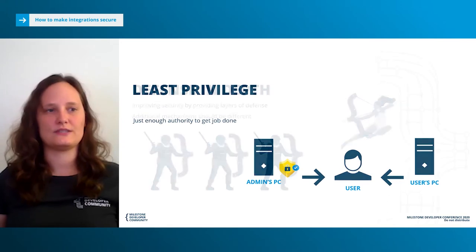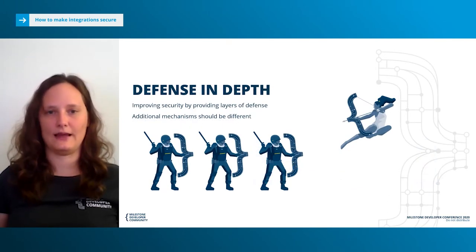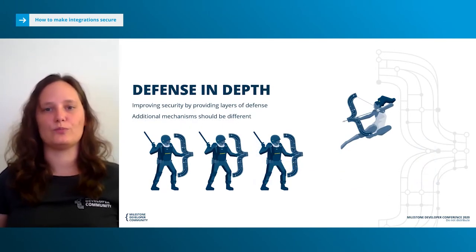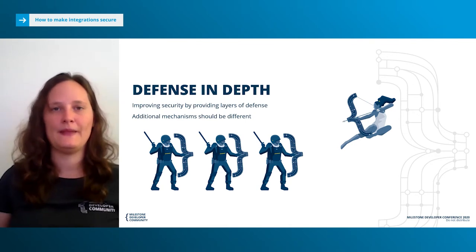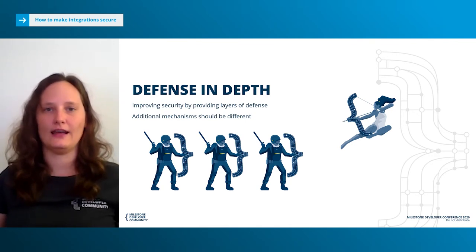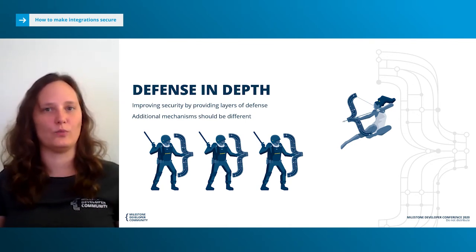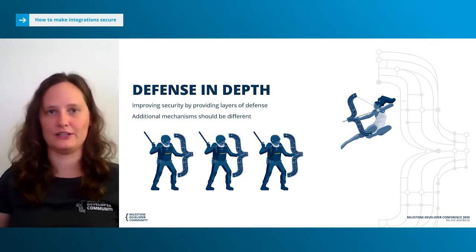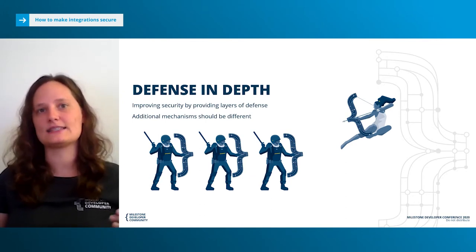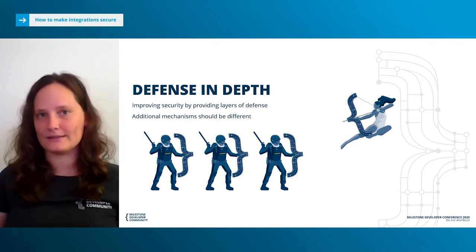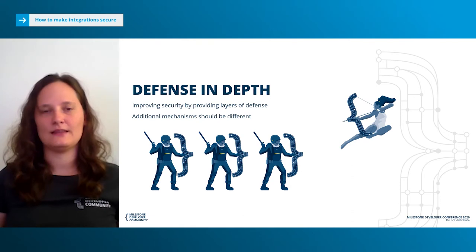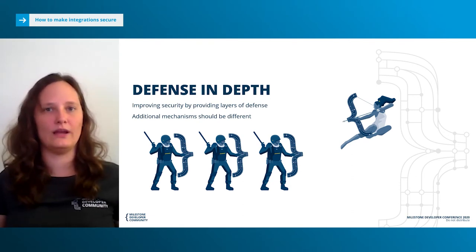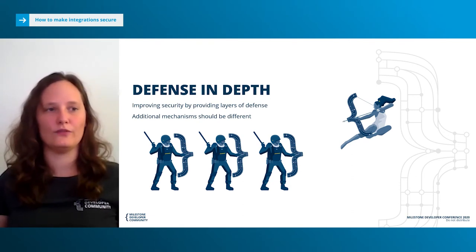The next principle is called Defense in Depth, meaning you should improve your security by providing layers of defense, and each additional layer should be different. Because if an attacker attacks one layer and manages to penetrate it, he still has several other layers to go. But if all the layers are the same, nothing stops him from penetrating all of them at once.